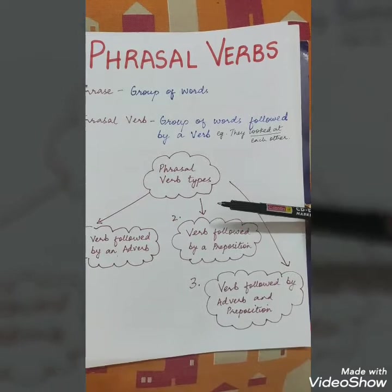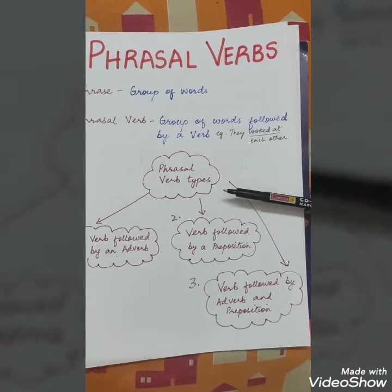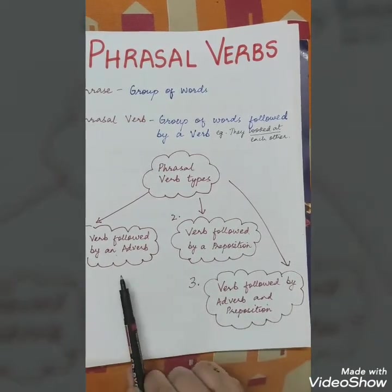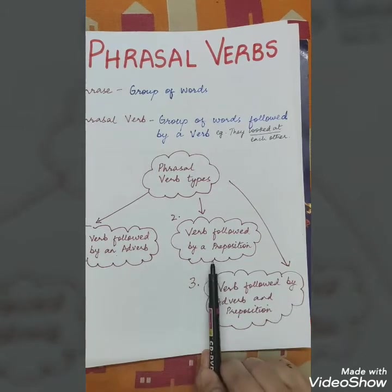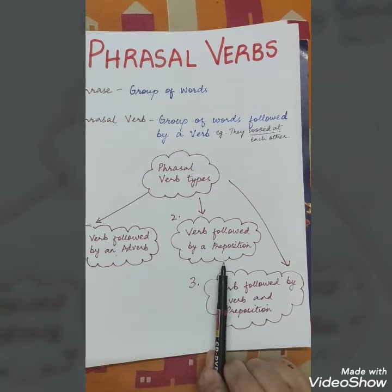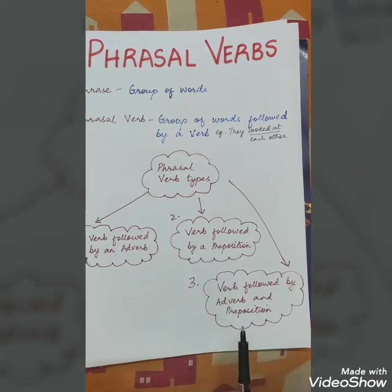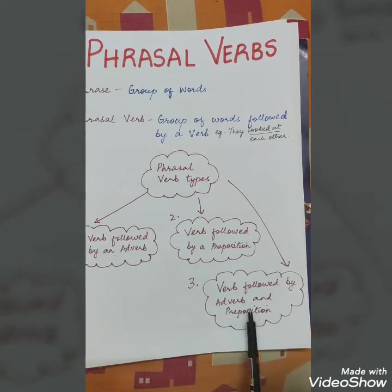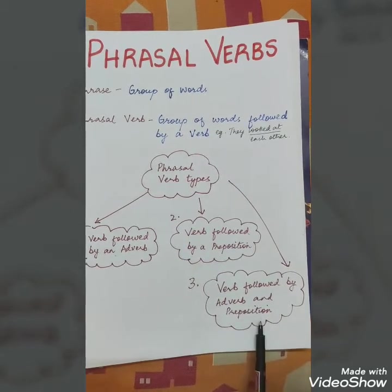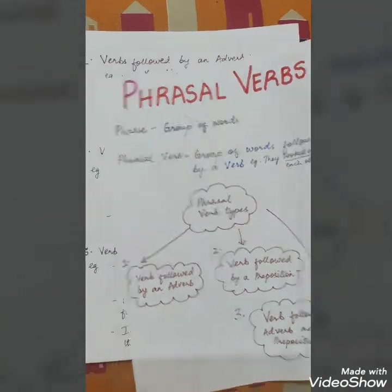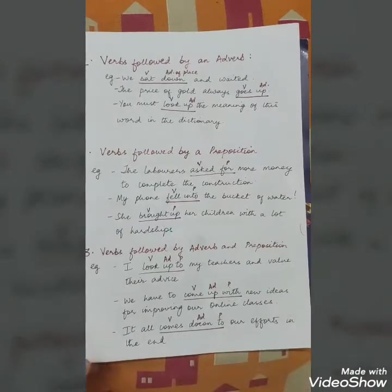Phrasal verbs are of three types. The first one is a verb followed by an adverb, then a verb followed by a preposition, and thirdly a verb followed by an adverb and a preposition. Let us see these by a few examples.